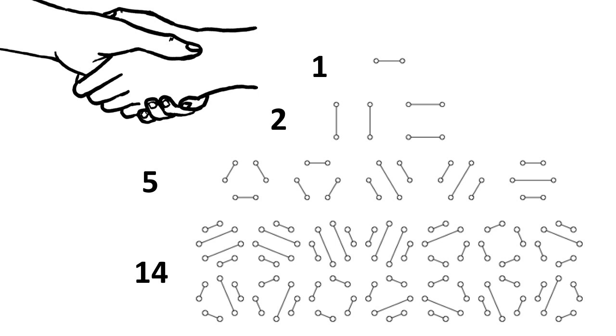They count the number of ways for an even number of people around the table to shake hands without crossing. Lastly, for now, the Catalan numbers count the number of ways to order n pairs of open and closed parentheses.